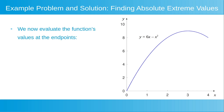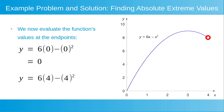We now evaluate the function's values at the endpoints. At the left endpoint, y is equal to 6 multiplied by 0 minus 0 squared, and this is equal to 0. At the right endpoint, y is equal to 6 multiplied by 4 minus 4 squared. This is equal to 24 minus 16, which is equal to 8.